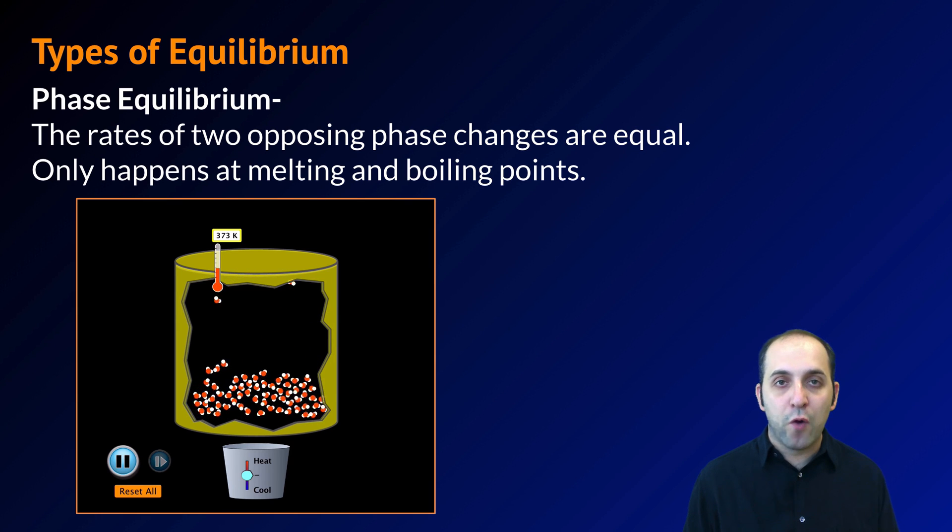This simulation shows water at its boiling point, and you can see that we have a phase equilibrium between the gaseous water and the liquid water. For every molecule of water that becomes a gas, one molecule of the gas water condenses back to the liquid. As long as those two rates are equal, this substance is at a phase equilibrium.